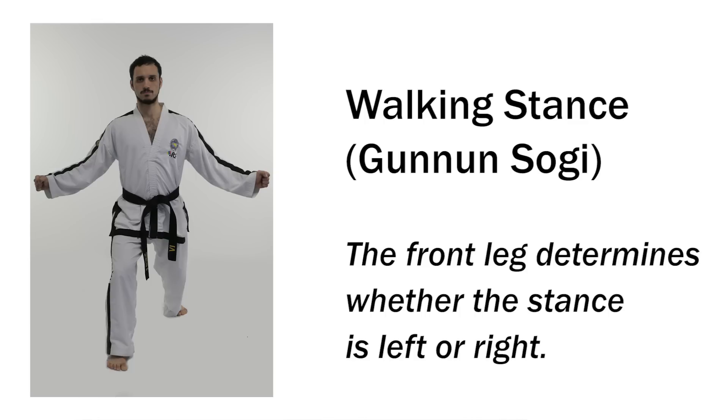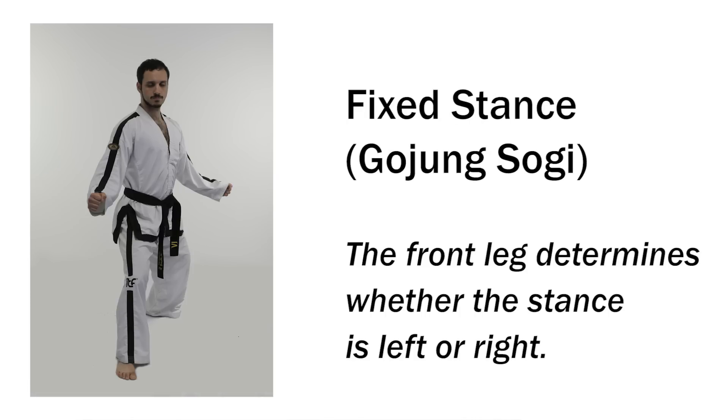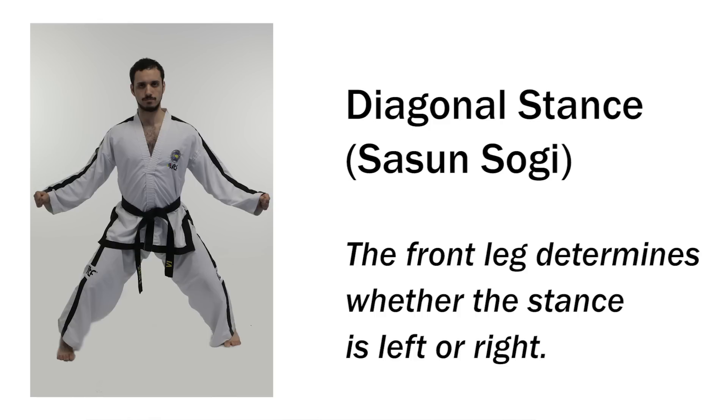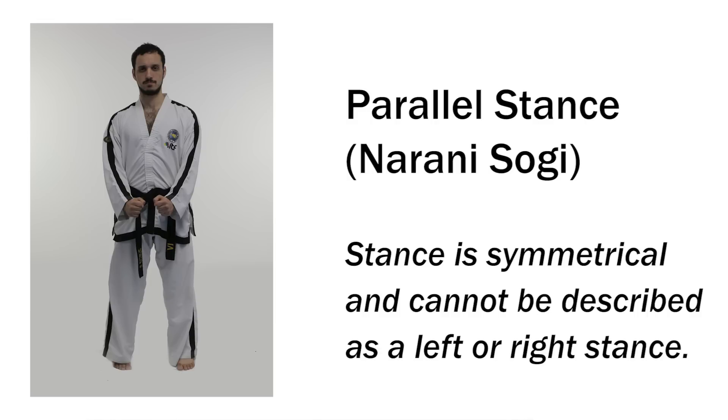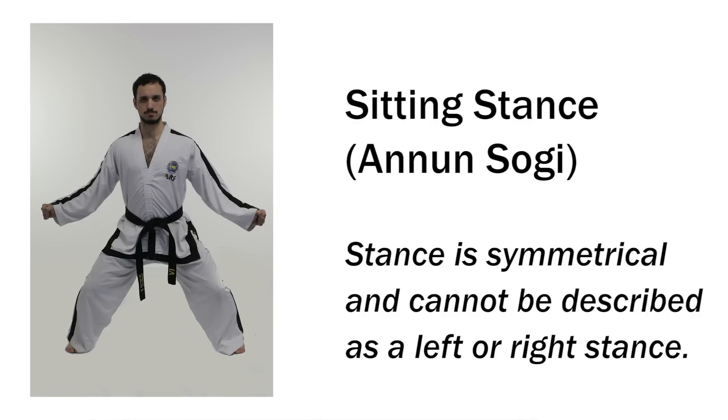So in cases like walking stance, low stance, fixed stance, and diagonal stance, whichever leg is in front determines whether it's a left or right stance. There are also stances which have 50-50 weight distribution but are completely symmetrical, so neither the left leg nor the right leg is in front — for example close stance, parallel stance, and sitting stance. These stances cannot be described as being left or right, so when we do techniques with these stances we cannot describe the technique as being obverse or reverse.